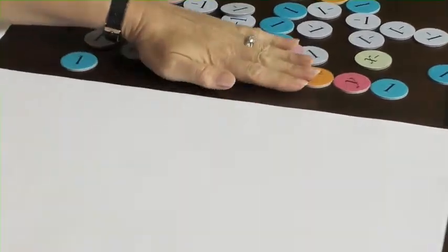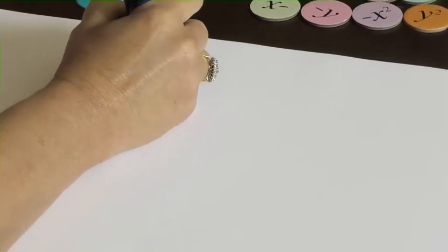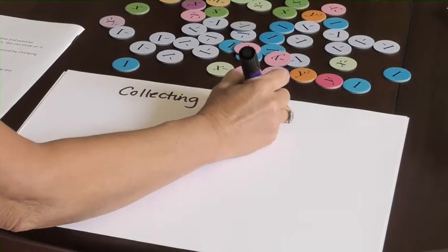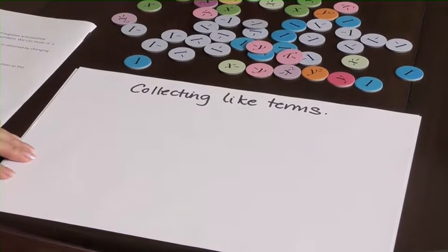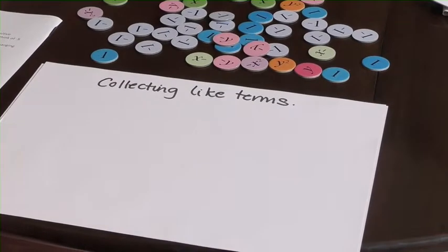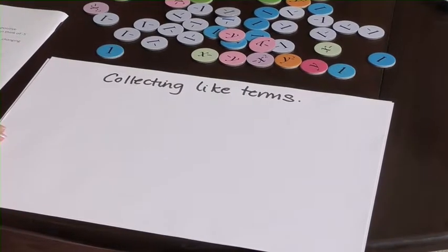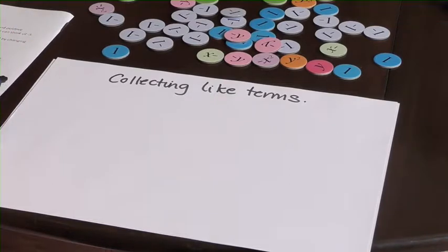So let's have a look at collecting like terms. What we're doing when we collect like terms is that we're adding and subtracting terms with identical variable parts. So we'll be collecting together all the ones that are similar: all the x's together, all the y's together, all the x squareds together, all the y squareds together.